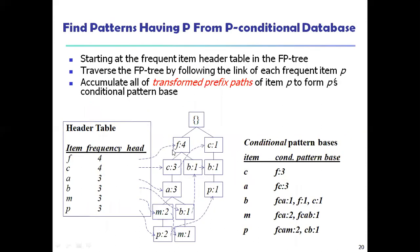Now we see how single items can be combined into patterns. Using the algorithm, we make conditional patterns and frame the transformed prefix paths to combine items. In the frequent itemsets written in descending order, we first make header links for all items. Then we trace the path: P comes along with M, A, C, and F; and another P comes along with C, P. So P is combined with F, C, A, M and also C.